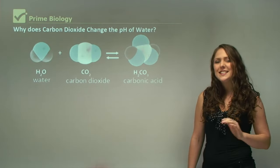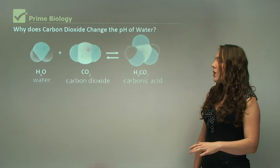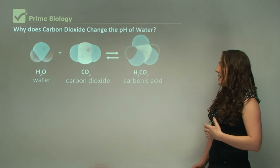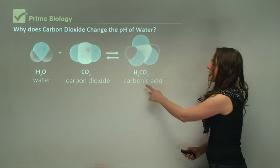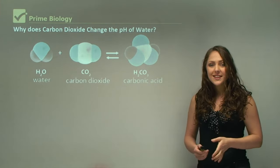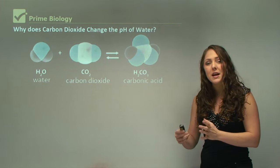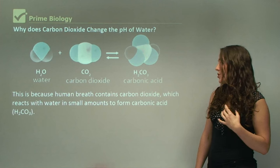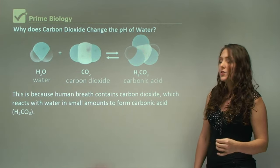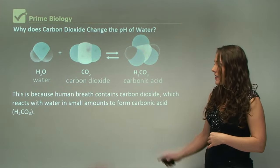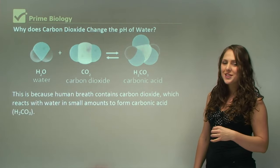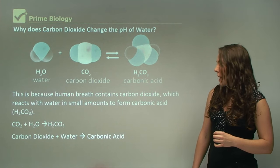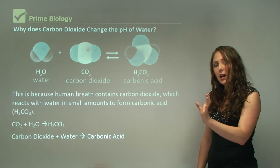Why does carbon dioxide decrease the pH of water? With water and carbon dioxide, the actual molecule that comes out is carbonic acid. Carbonic acid, as you can see here, has more hydrogen ions in it. Because it's got more hydrogen ions, it means it's becoming more acidic. This is because human breath contains carbon dioxide, which reacts with water in small amounts to form carbonic acid. That's the formula for carbonic acid, H2CO3. You can see that reaction taking place here: carbon dioxide plus water equals carbonic acid.